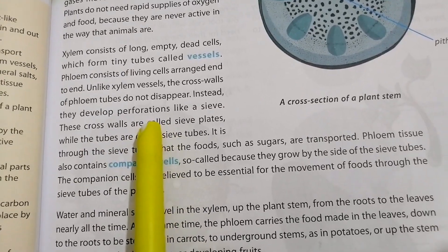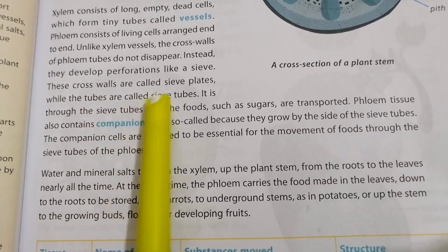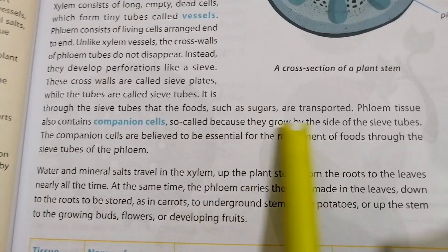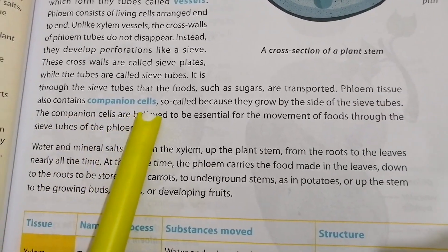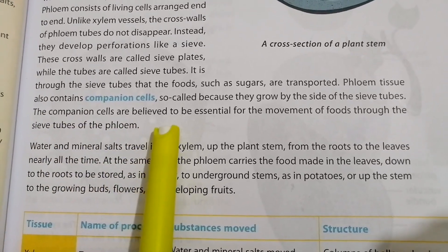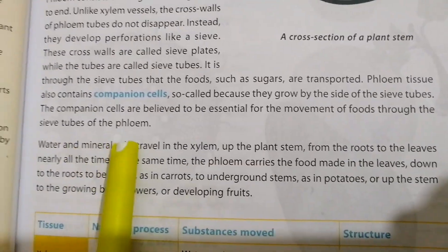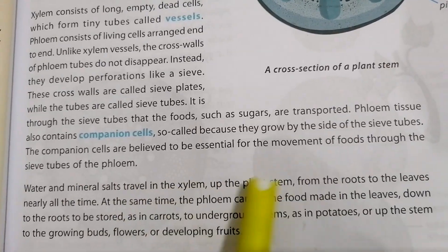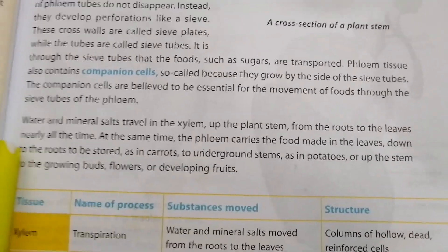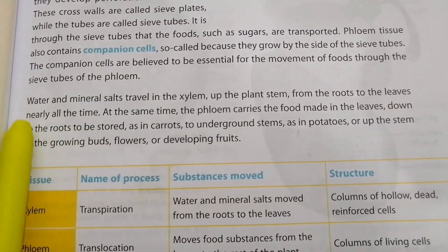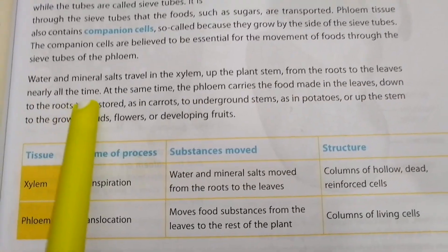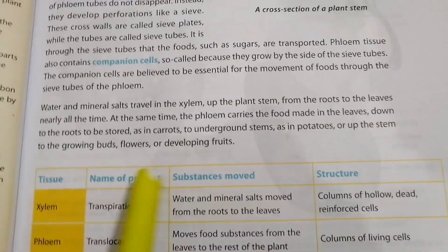Instead, they develop perforations like a sieve. These cross walls are called sieve plates, and the tubes are called sieve tubes. It is through the sieve tubes that food such as sugar is transported. Phloem tissue also contains companion cells, which grow beside the sieve tubes and are believed to be essential for the movement of food through the sieve tubes. Water and mineral salts travel up the plant's stem from the roots to the leaves via xylem.